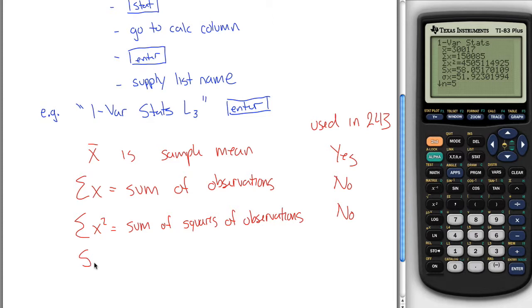The next one, S of X is the standard deviation. It's worth pointing out that this is our sample standard deviation. And you're definitely going to need that for 243.